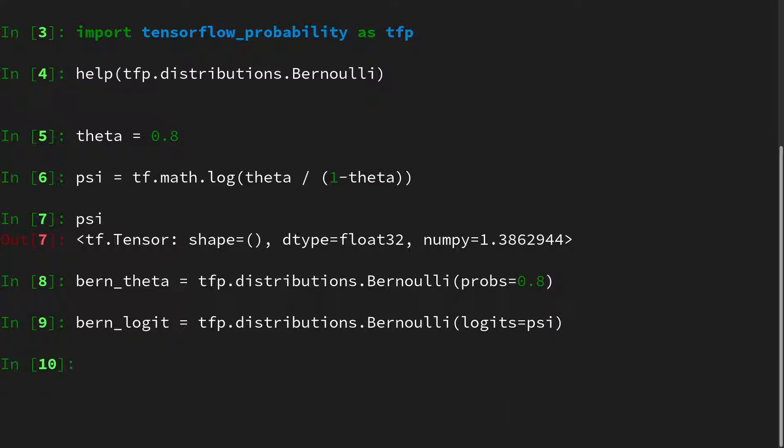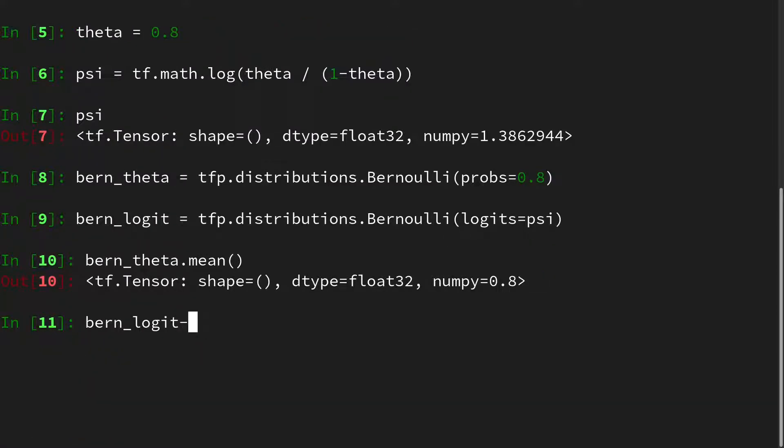If we now look at the mean of the distribution, they coincide. If we look at the Bernoulli with theta mean, by the definition of the Bernoulli this should be 0.8, similar to the parameter. If we look at the logit mean, this is identical. So they yield the same distribution.